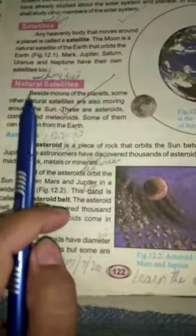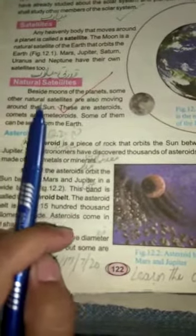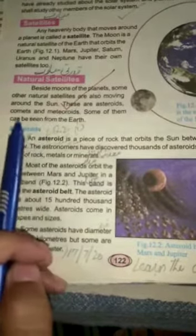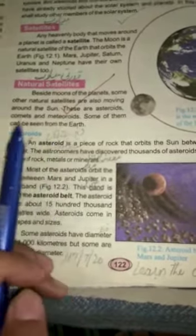The next one is natural satellites. The Moon is also moving around the Sun. These are the asteroids, comets and meteorites. Some of them can be seen from the Earth.